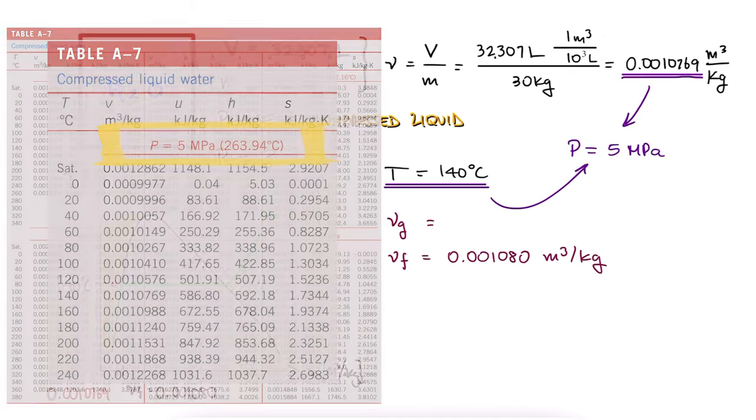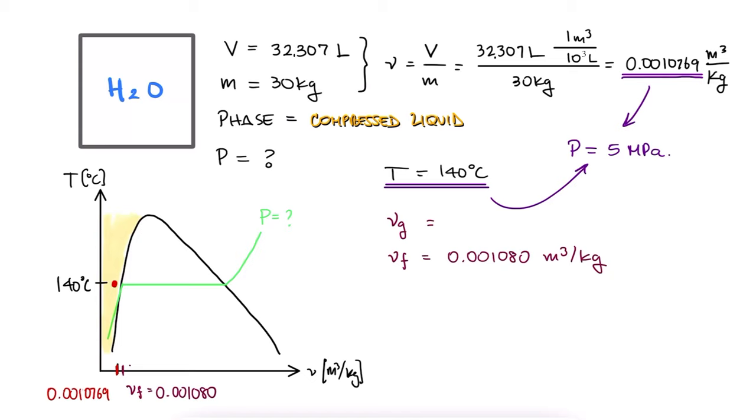Therefore, for water to be at 140 degrees Celsius and have a specific volume of 0.0010769, it must be at a pressure of 5 megapascals.